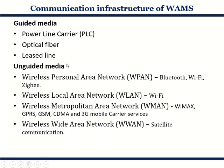Unguided is wireless communication infrastructure. It includes Wireless Personal Area Network (WPAN), which consists of Bluetooth, Wi-Fi, or Zigbee; Wireless Local Area Network (WLAN), which consists of Wi-Fi; Wireless Metropolitan Area Network or Neighborhood Area Network, which consists of WiMAX, GPRS, CDMA; and the Wireless Wide Area Network, which consists of satellite communication.